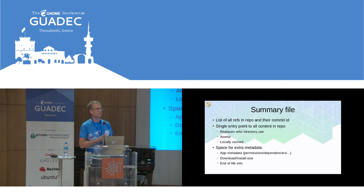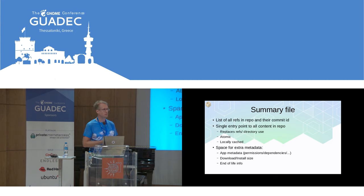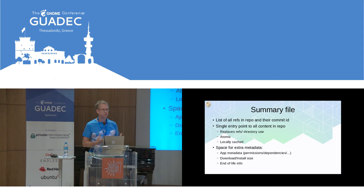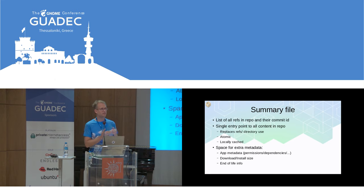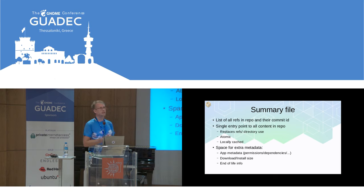The summary file has extra features — it helps avoid the problem of not being able to enumerate things, and it's a single atomic way to get access to the entire contents of the repository at a point in time. Since all we ever do is add objects to a repository, if you have a summary file from a particular point in time you have full access to the entire state at that time. So if you have a dependency between an app and its locale extension, you can be sure they'll match even if downloading takes a while.